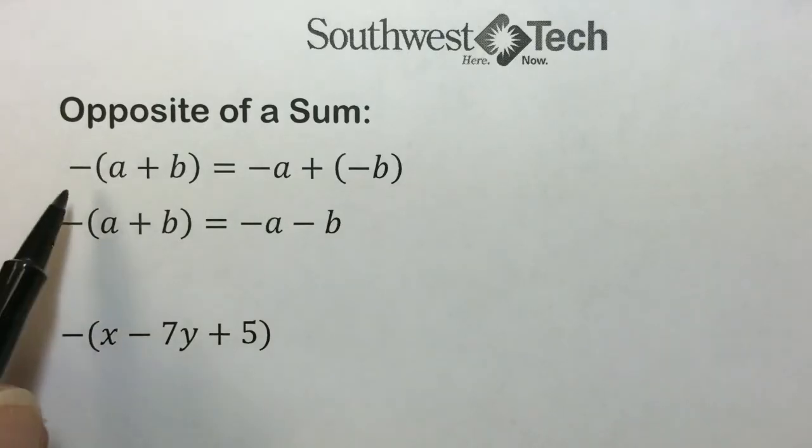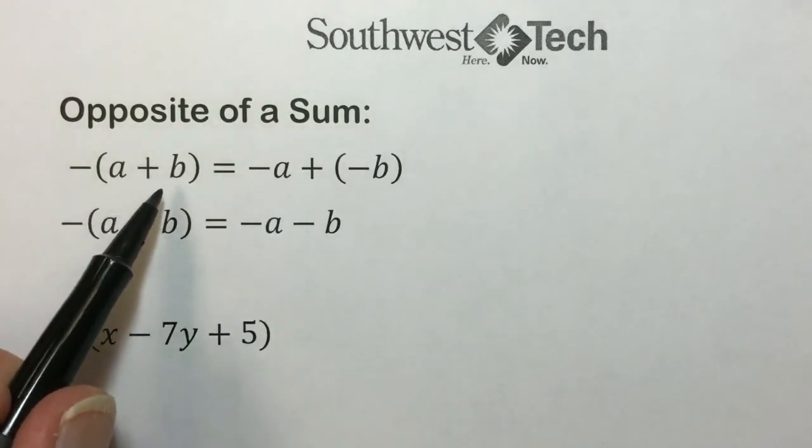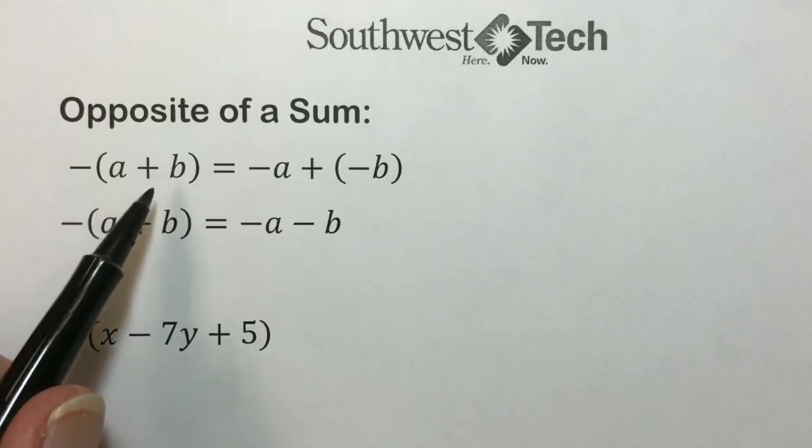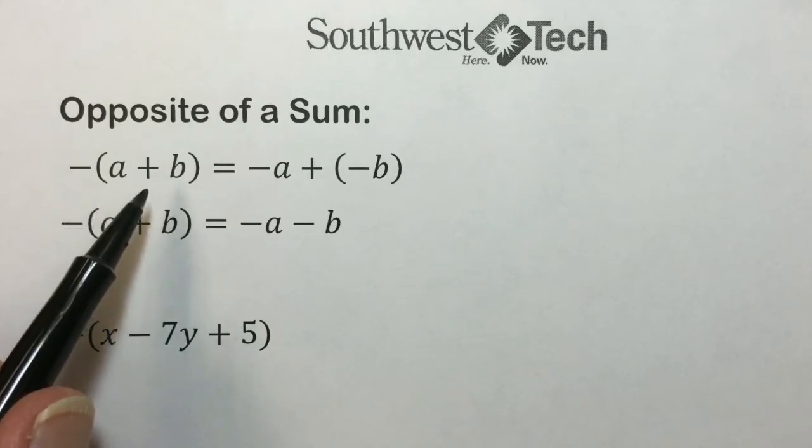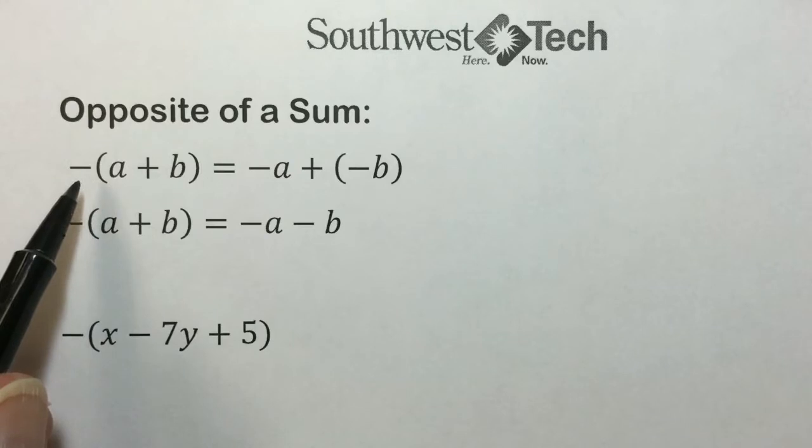An expression such as negative 1 times the quantity a plus b indicates the opposite or additive inverse of the sum of a and b. When a sum within grouping symbols is preceded by the negative symbol, we can multiply the sum by negative 1 and use the distributive property.